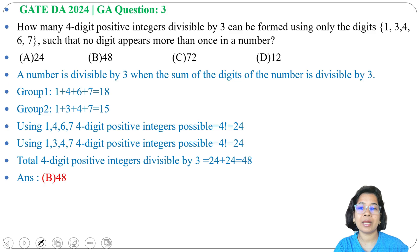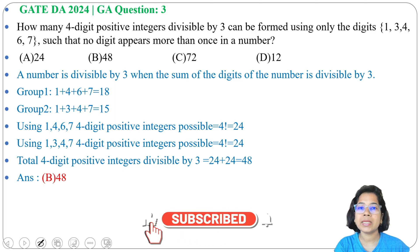So 48 4-digit positive integers are divisible by 3 by using 1, 3, 4, 6, 7, such that no digit appears more than once—there is no repetition—and 48 numbers are possible. If this lecture is helpful for you, please like, share, and subscribe. Thank you.